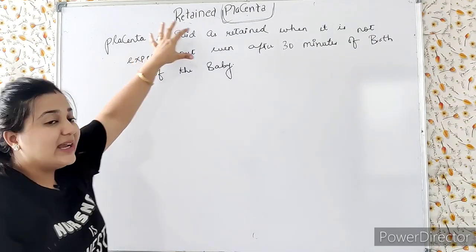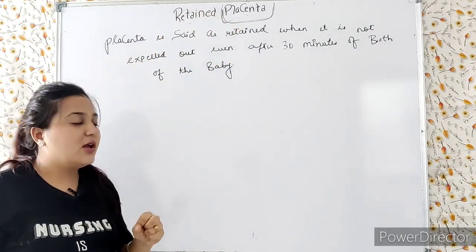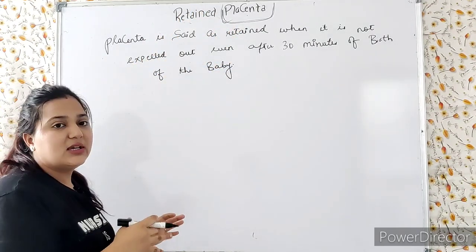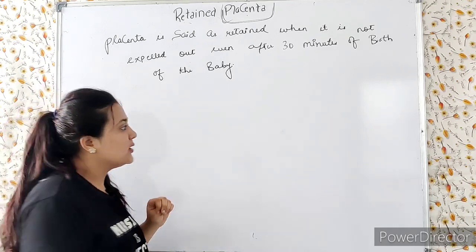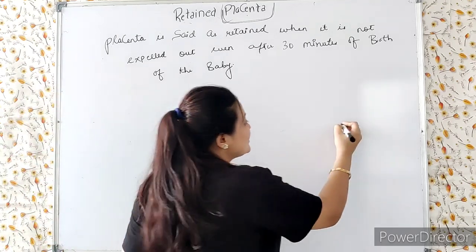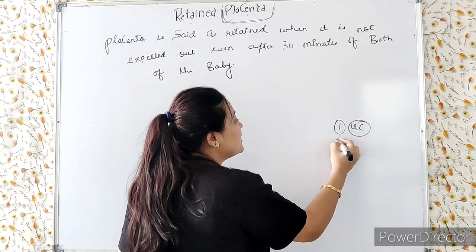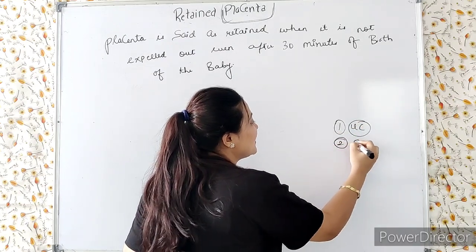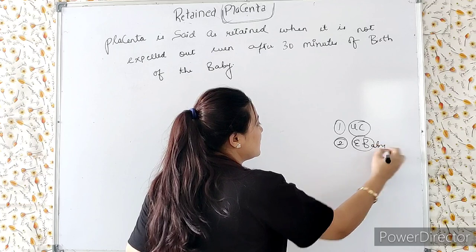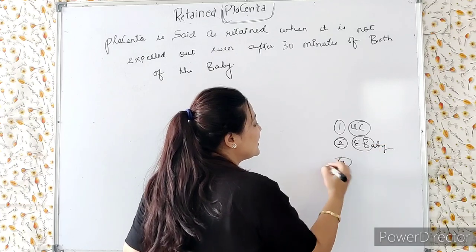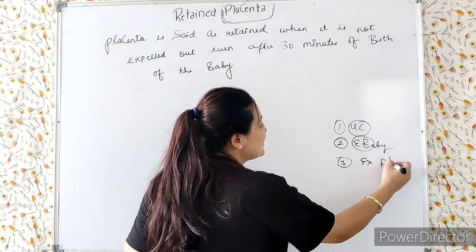Retained placenta occurs at the time of delivery. There are 4 stages of labor. In the first stage, uterine contractions start. In the second stage, there is expulsion of the baby. In the third stage, there is placenta expulsion.